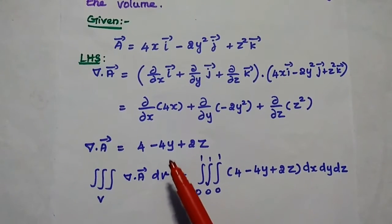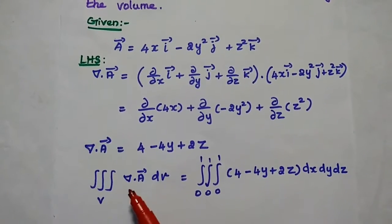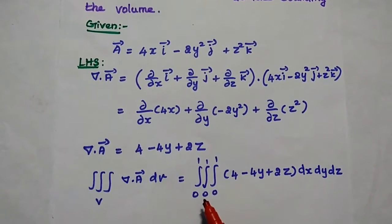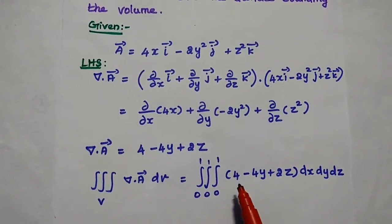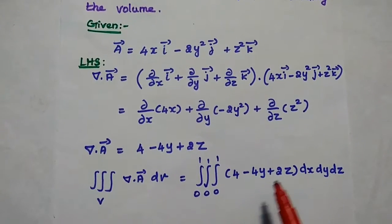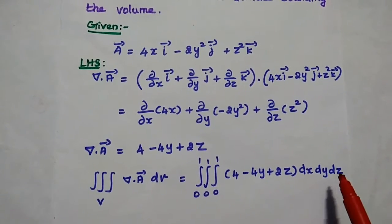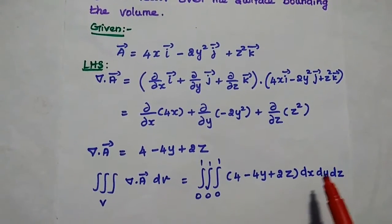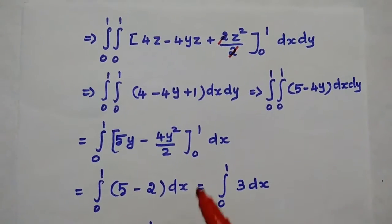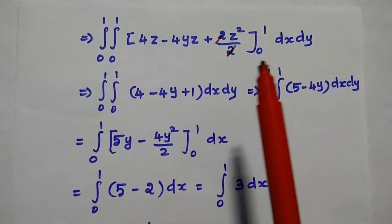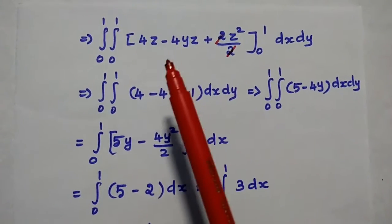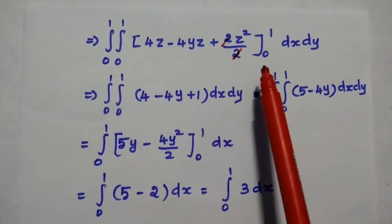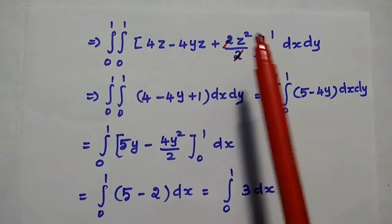Next, we take the volume integral of this divergence. We write the triple integral with limits 0 to 1: ∫∫∫(4 − 4y + 2z) dx dy dz. First, we integrate with respect to z, giving 4z − 4yz + z² (since 2z²/2 = z²), evaluated from 0 to 1.